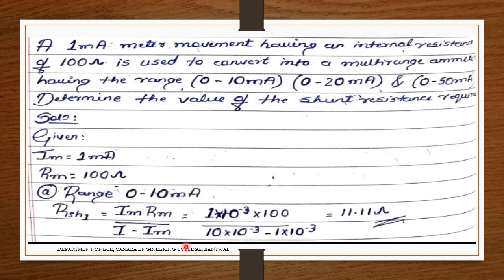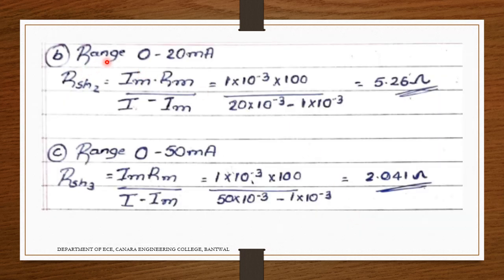For range 0–10 mA: R_sh1 = (I_m × R_m) / (I minus I_m) = (1 mA × 100) / (10 mA minus 1 mA) = 100/9 ≈ 11.11 Ω. For range 0–20 mA: R_sh2 = (1 mA × 100) / (20 mA minus 1 mA) = 100/19 ≈ 5.26 Ω.